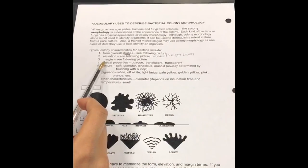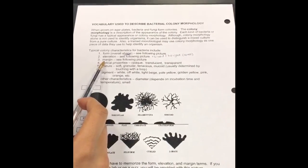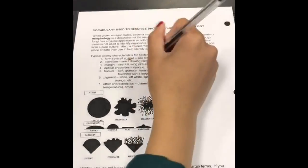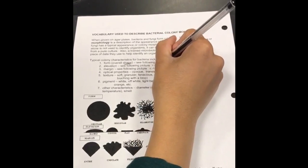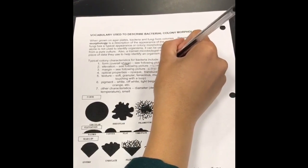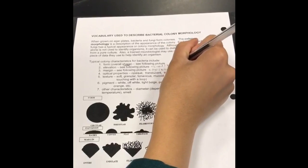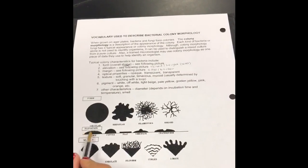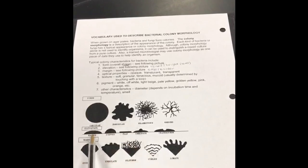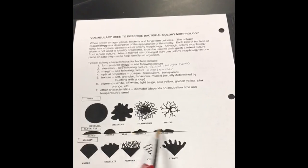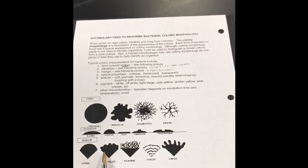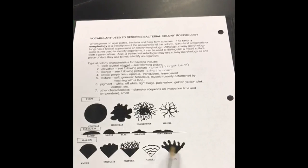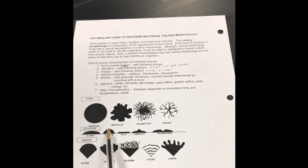Next would be margin, which is the edge or border of the colony. Looking at the diagram, you can see there are different types of elevation and different types of margins. So margin refers to the edge or border, and elevation refers to the height.